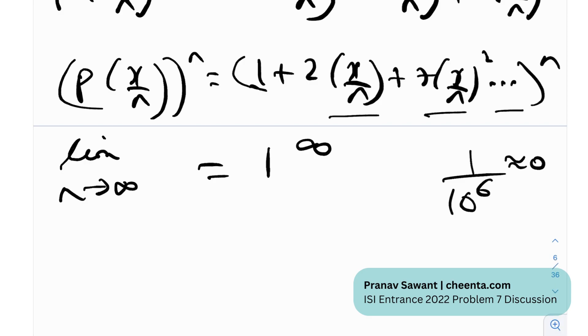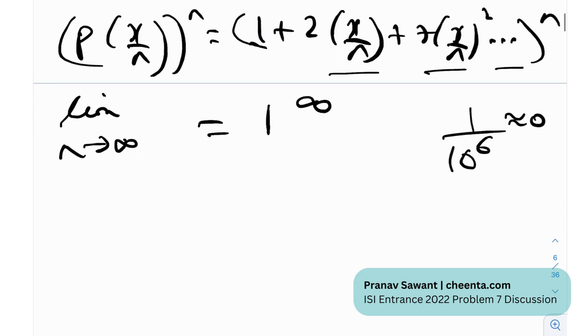Okay, so now that we have deduced it is of the form 1 raised to the power of infinity, let us look at a standard way to solve such indeterminate quantities. This is one of the seven indeterminate quantities in mathematics, in limits. And to solve this, we essentially use a property of logarithms, which essentially says that for any number k, any number k can be represented as a raised to the power log k to the base a, right?